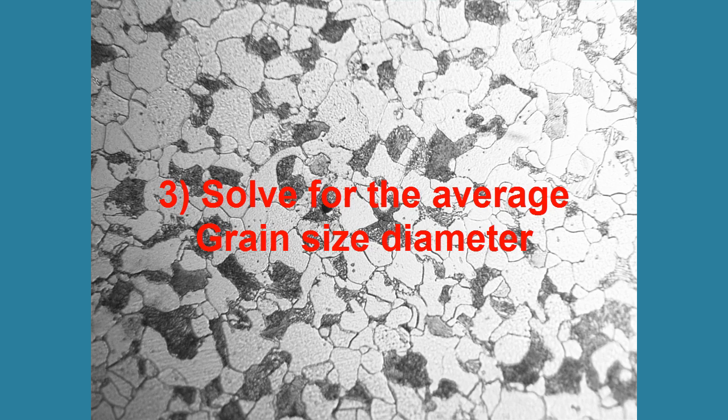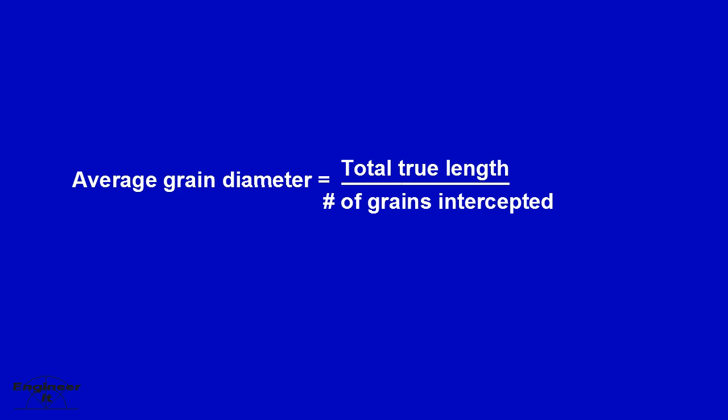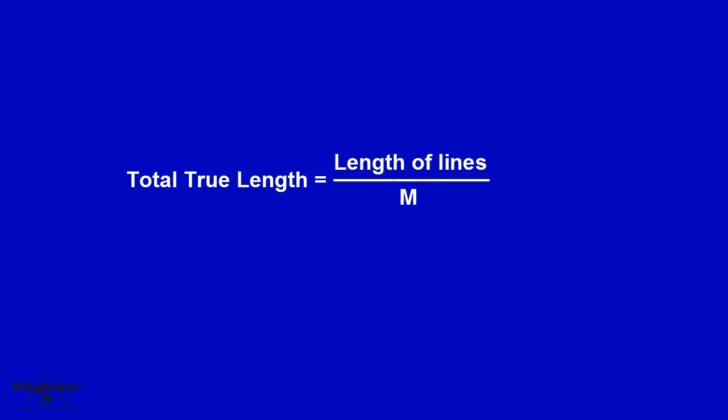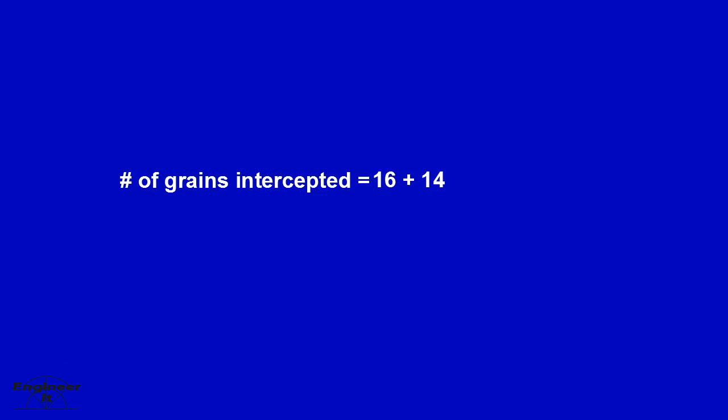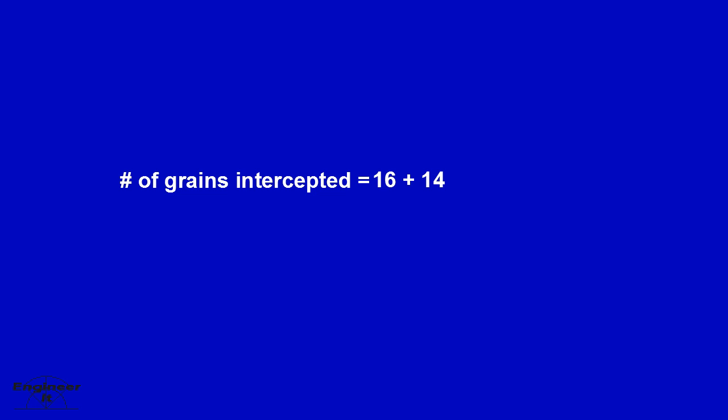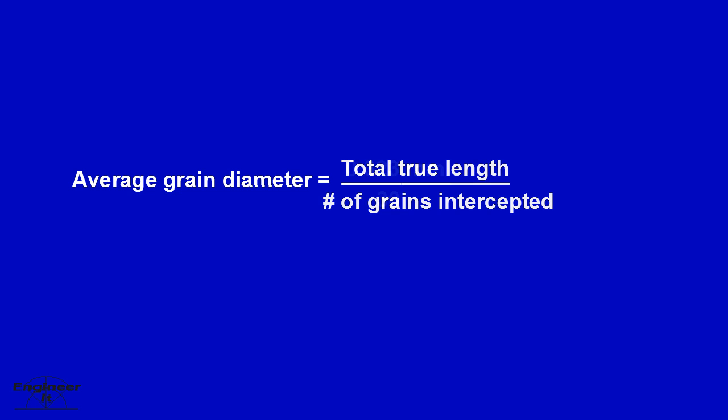The last thing to do is solve for the average grain size diameter. First, by solving for the total true length, then solving the number of grains intercepted. Number of grains intercepted refers to the grains intercepting two vertical lines. Plug in the values to solve for the average grain diameter. This concludes number 3.